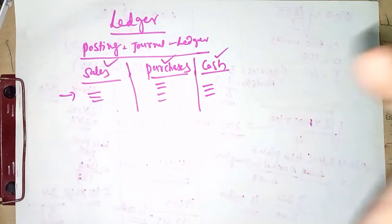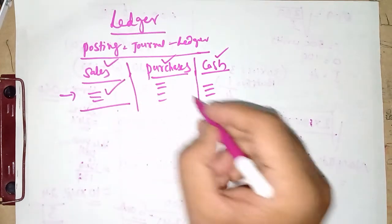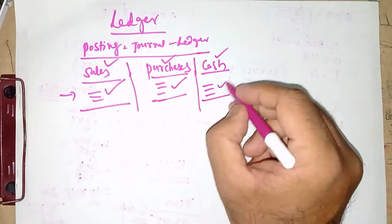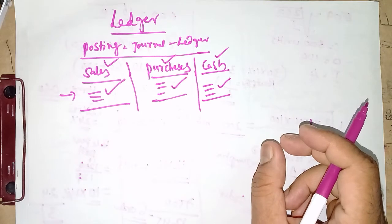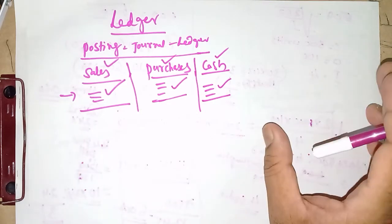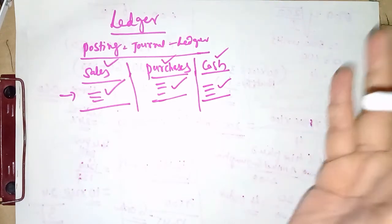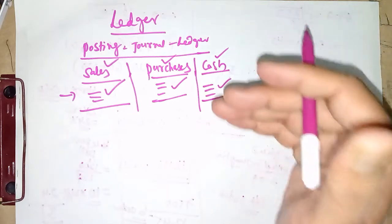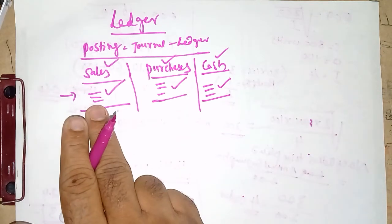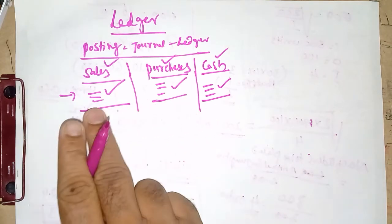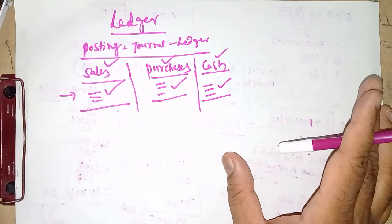The objective of this division is to ascertain on a particular day what is the amount of total sales, total purchases, and what is the cash balance we are possessing. That is the basic objective — to ascertain the balances — which is not possible in the case of journal. Ledger is essentially a personal account where all transactions pertaining to that account are posted from journal to ledger. In the sales ledger we write only sales-related transactions, not purchases or capital transactions.